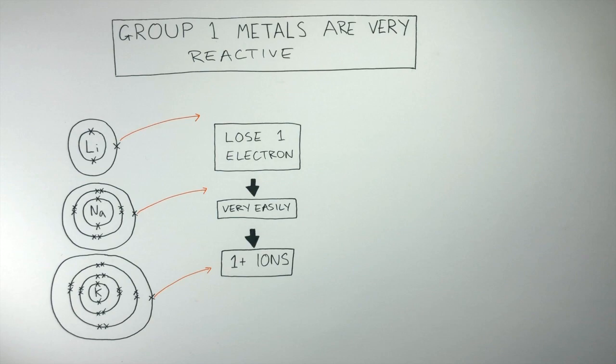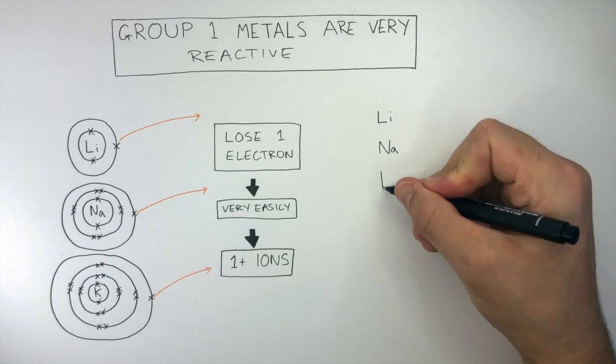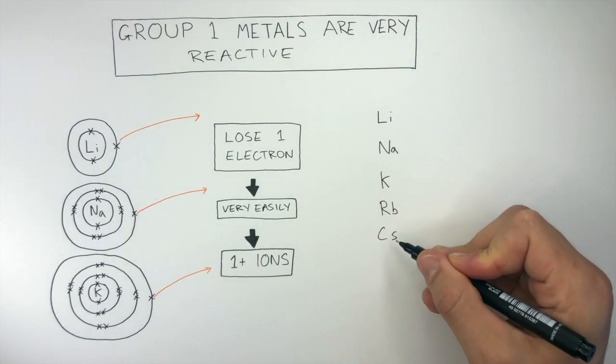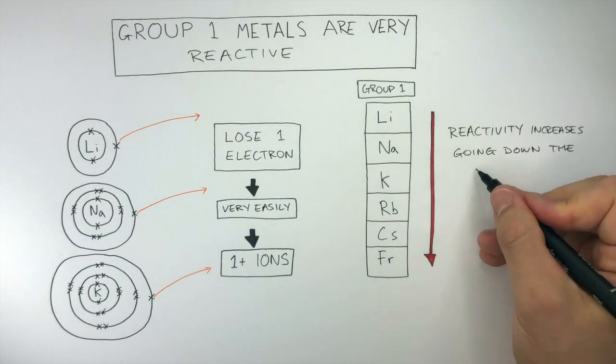The elements in group 1 from top to bottom are lithium, sodium, potassium, rubidium, cesium and francium. The reactivity increases going down the group.